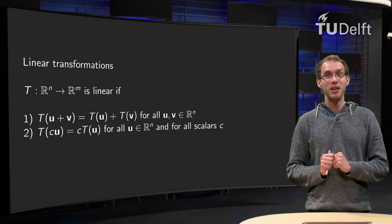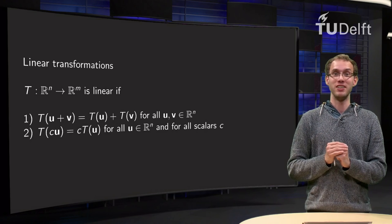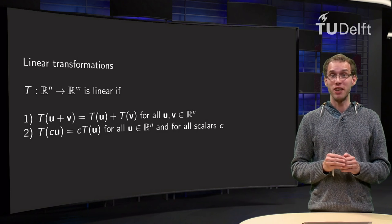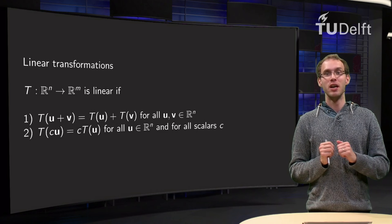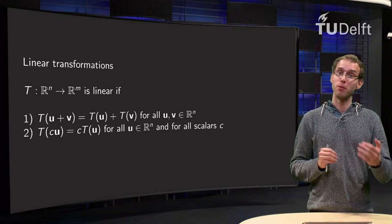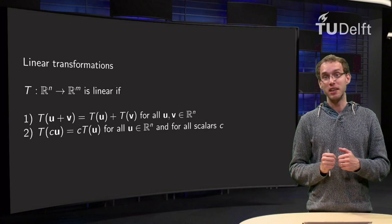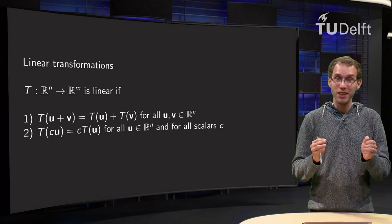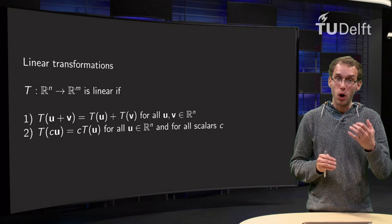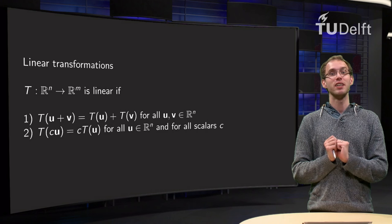Vector spaces are interesting, and transformations from vector spaces to other vector spaces are even more interesting. In linear algebra we will restrict ourselves to linear transformations. We have already seen examples of linear transformations from R^n to R^m. In this video you will see that transformations with more general vector spaces resemble their counterparts in R^n, but there is a distinct difference.